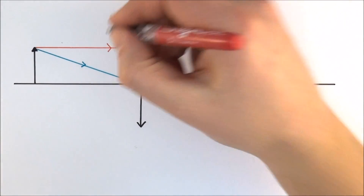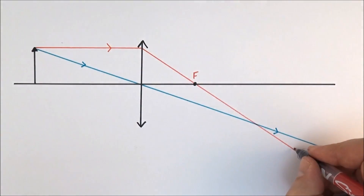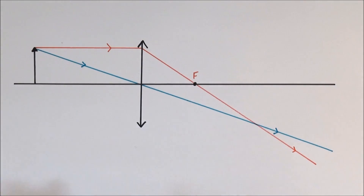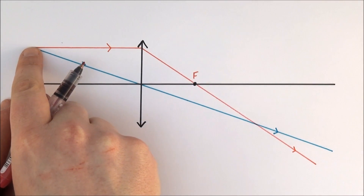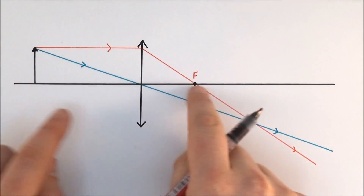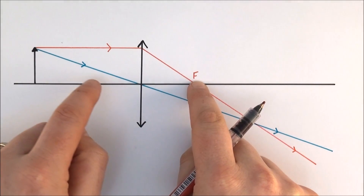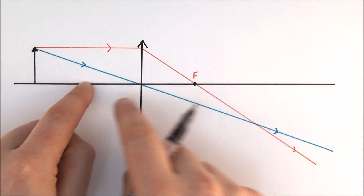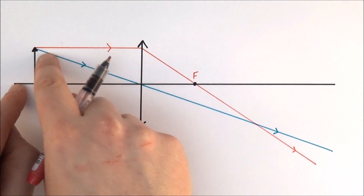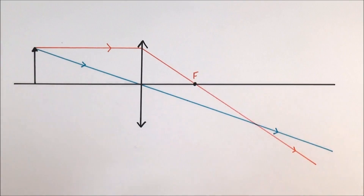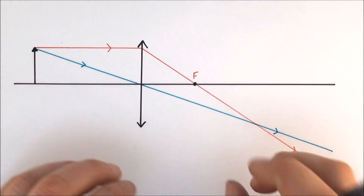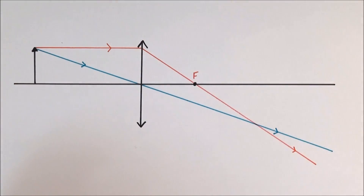So we've got just two rays of light. There would probably be a third ray we could consider — if there's a focal point on one side there's a similar one on the other side, and we might consider a ray that goes through there and comes across. But I'm going to ignore that; two rays of light is good enough.